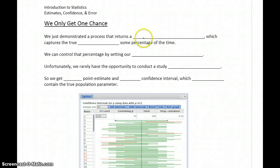We just demonstrated a process that returns a confidence interval, which captures the true parameter some percentage of the time. We generate all of those confidence intervals by repeating that experiment over and over again. We can set the confidence level, which will control how often our interval will capture that true parameter.